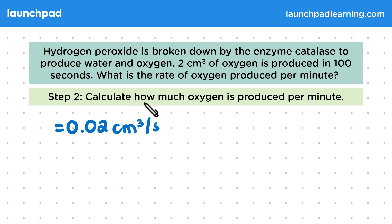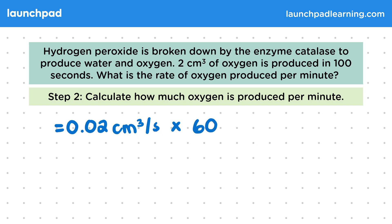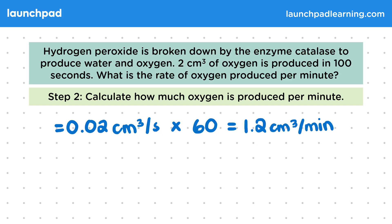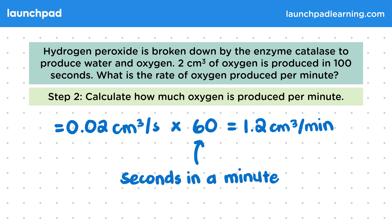Next, we want to calculate how much oxygen is produced per minute. We know that 0.02 centimetres cubed is produced per second, and there are 60 seconds in a minute. So we're going to multiply this value by 60 to give us 1.2 centimetres cubed per minute. Remember that there are 60 seconds in one minute — that's where this value has come from.